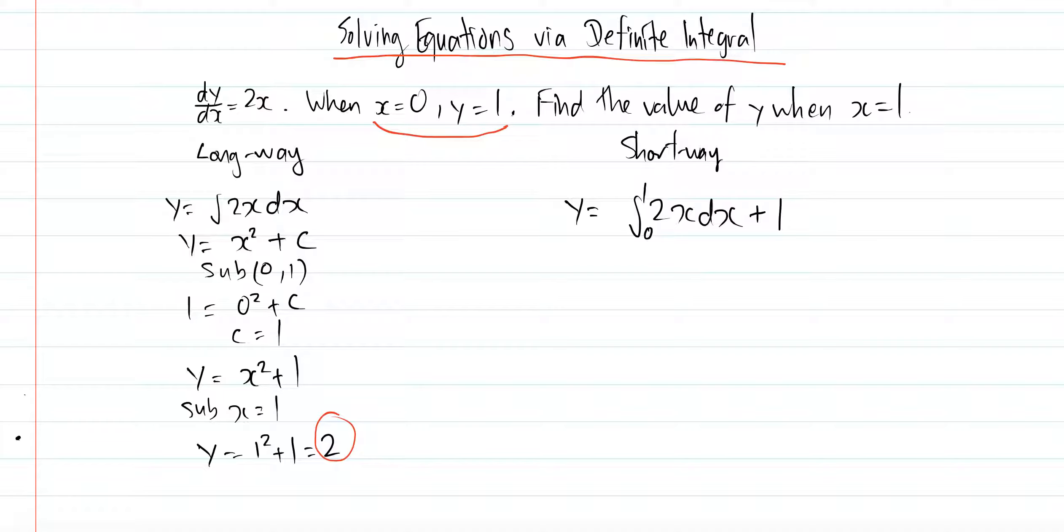Then just integrate it. So x squared from 0 to 1, plus 1. Bring in 1 over here: 1 squared, then if you want, bring in 0—minus 0 squared plus 1. 1 plus 1 equals 2, which is the same answer as what you had here.